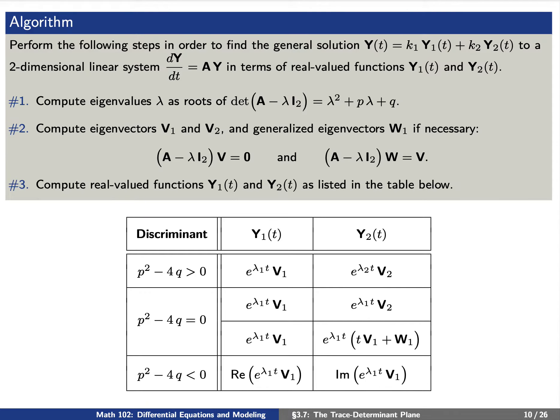Let me remind you of the algorithm for how we solve a two-dimensional system — that is, how we find a general solution in the form Y = k₁y₁ + k₂y₂. First step: compute eigenvalues as roots of the characteristic polynomial λ² + pλ + q. Second: compute eigenvectors v₁ and v₂, as well as generalized eigenvectors w₁ if necessary.